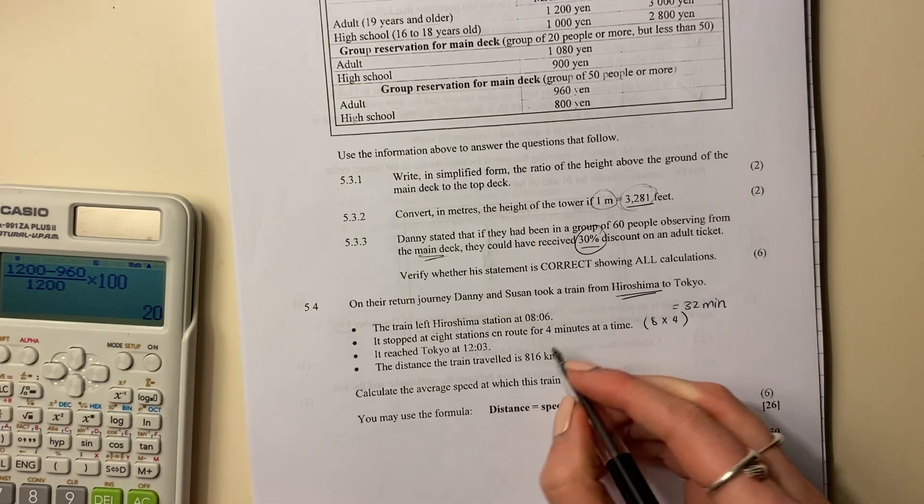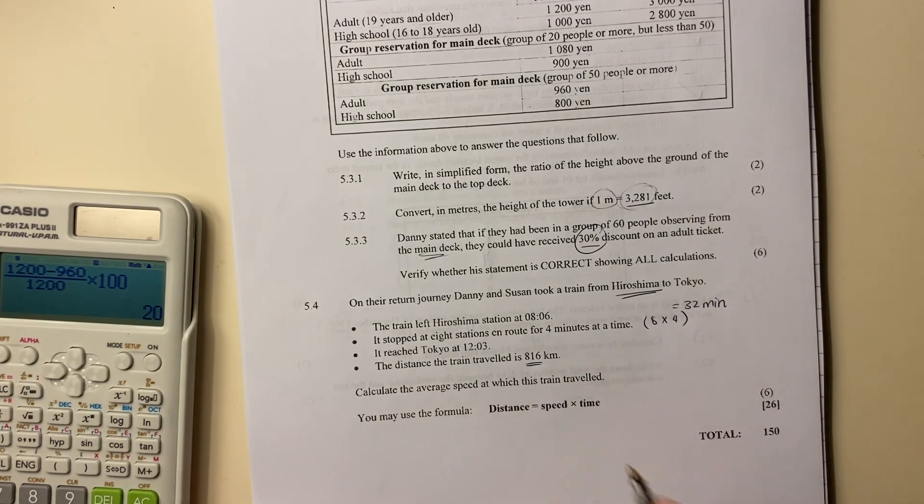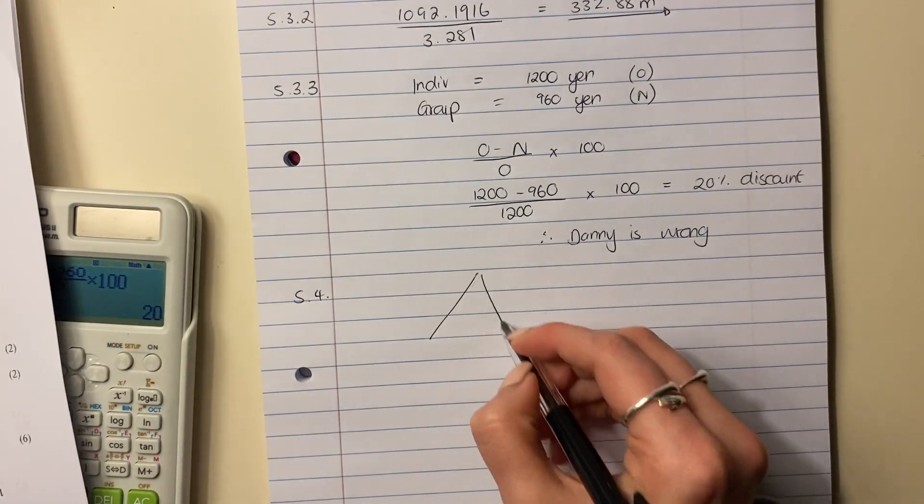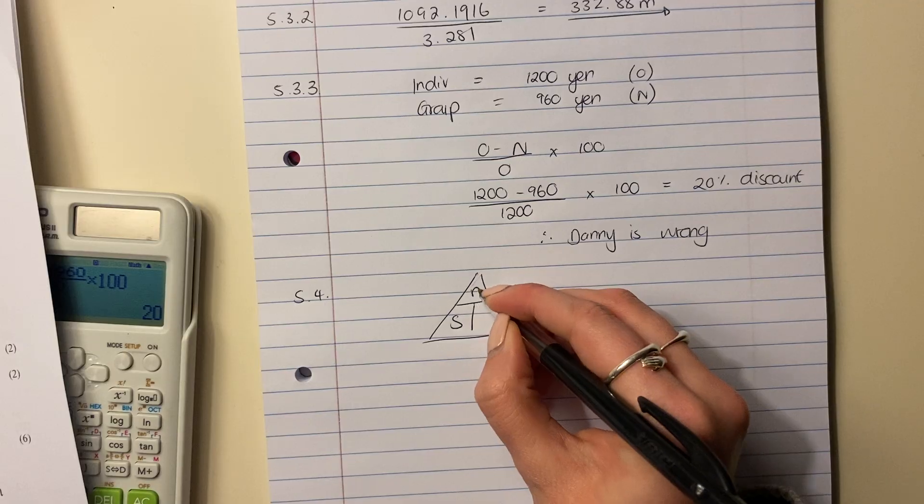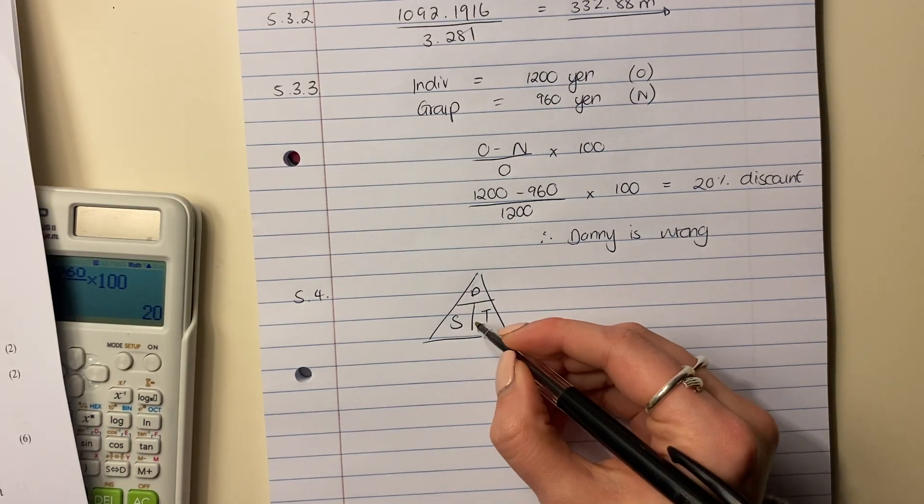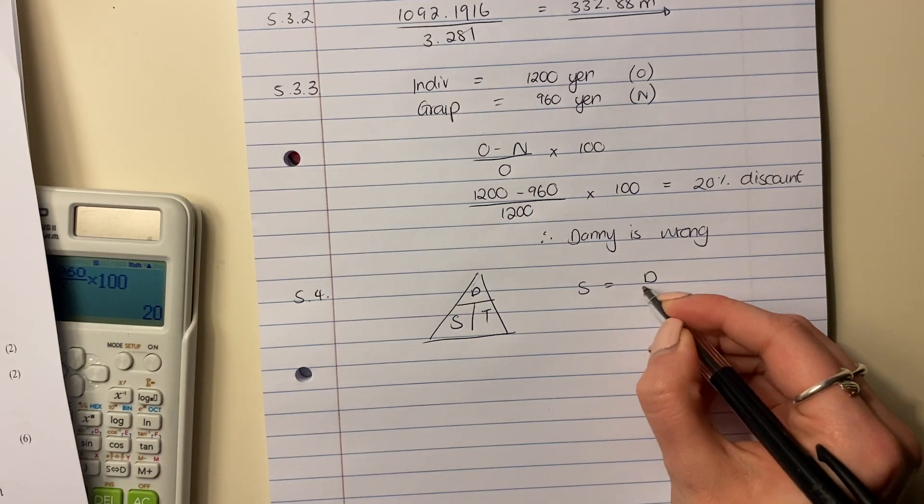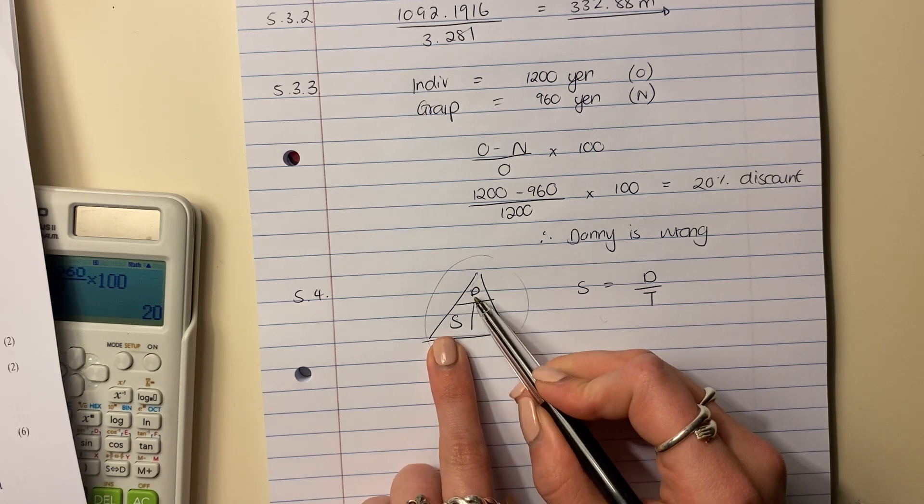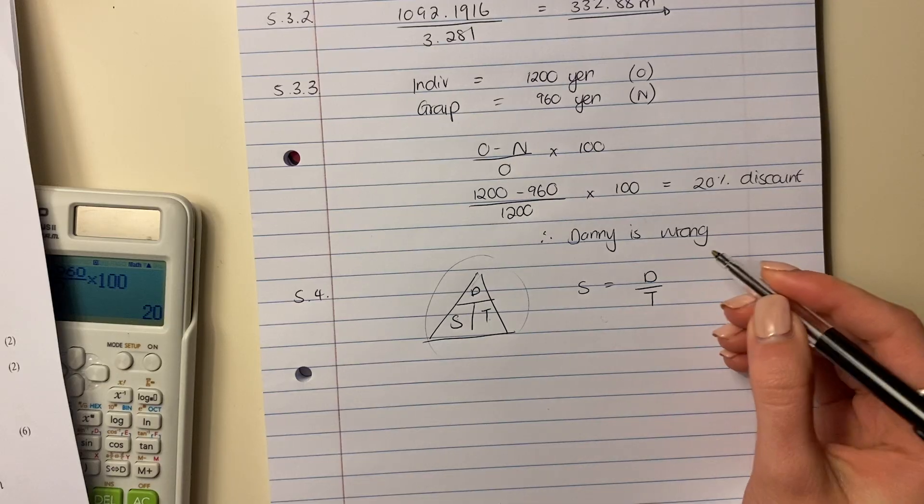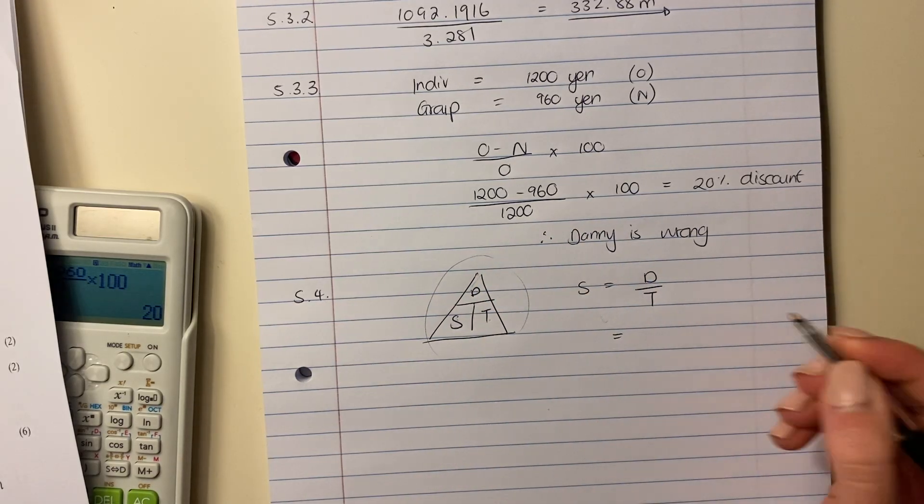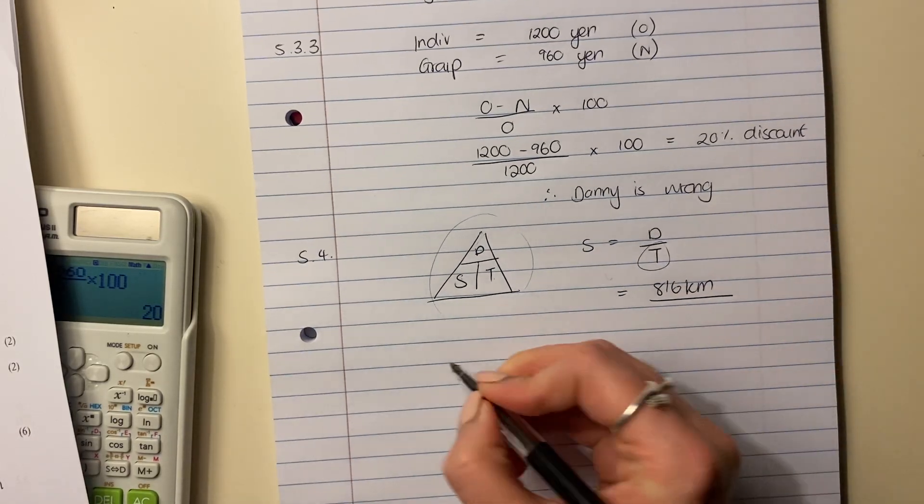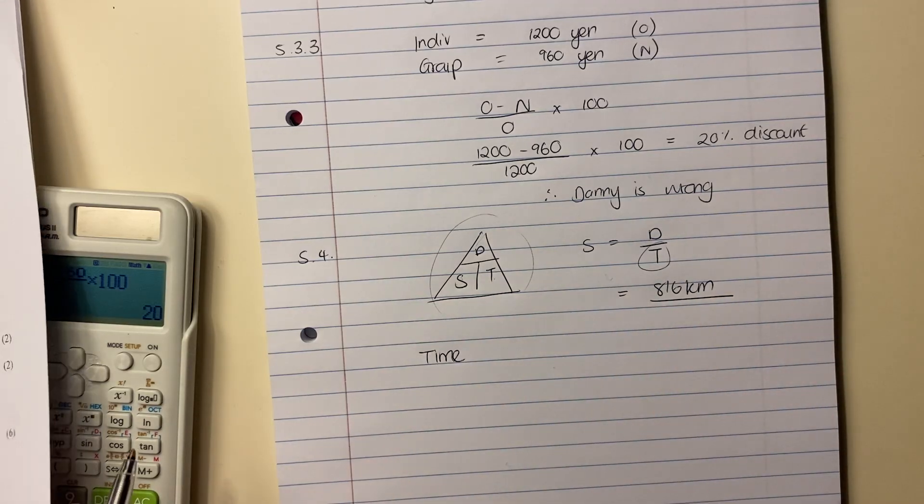The distance the train traveled is that amount in kilometers. It says calculate the average speed at which the train traveled. But they've given us a formula in terms of distance. Now you should remember this little triangle. Speed equals distance over time. Because we want speed, it's going to be distance over time. What's really helpful here is that time equals distance over speed, and distance equals speed times time. So you can get all the different iterations from this little triangle. What's the distance? Well, that's easy. But the time is a little bit more complicated. So let's work on time.